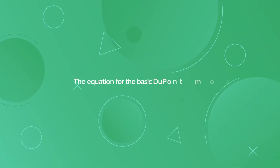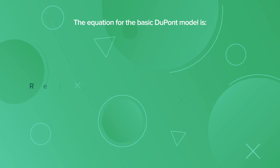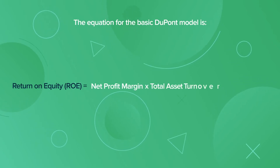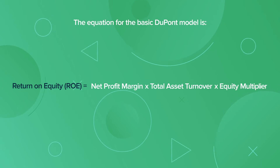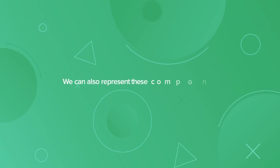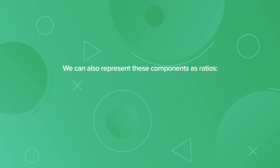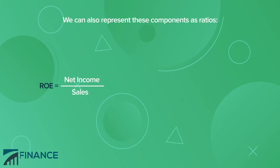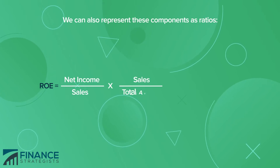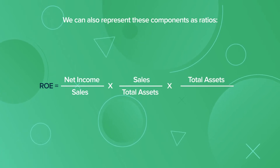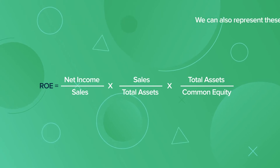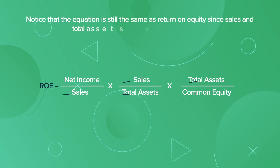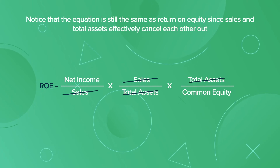The equation for the basic DuPont model is: ROE equals net profit margin times total asset turnover times equity multiplier. We can also represent these components as ratios: ROE equals net income divided by sales, times sales divided by total assets, times total assets divided by common equity. Notice that the equation is still the same as Return on Equity since sales and total assets effectively cancel each other out.